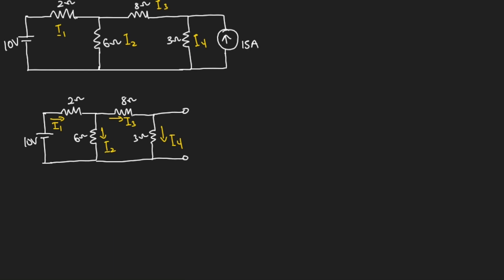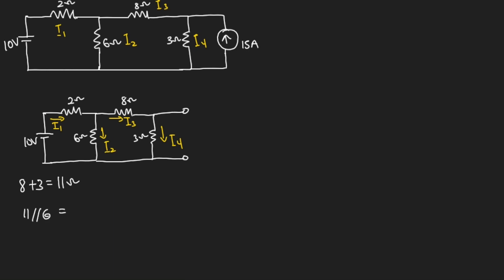Now let's find the various current values. To do this, you must calculate the total current flowing through the circuit, but first you must know the total resistance. You can see that the 8 ohms and 3 ohms will be in series because this side is open-circuit. So we have 8 plus 3, which gives us 11 ohms. And this 11 ohms will be in parallel with the 6 ohms, so we have 11 parallel 6, which equals 11 times 6 divided by 11 plus 6, giving us 3.88 ohms.